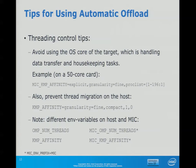Here are some tips for Automatic Offload. To explicitly set affinity for a process with, say, 50 cores and 200 threads as an example, you write MIC_KMP_AFFINITY — maybe not explicit, you can leave it out and say granularity equals fine or core, then comma, then balance. You should also pin the host system, because in Automatic Offload we're talking about heterogeneous execution where both host and MIC will be used, so affinity on the host side also matters.